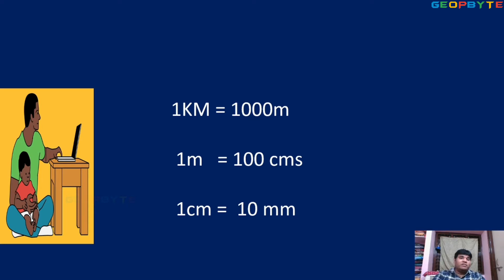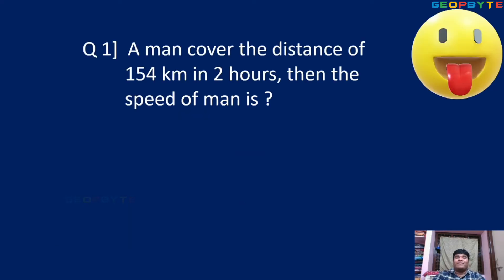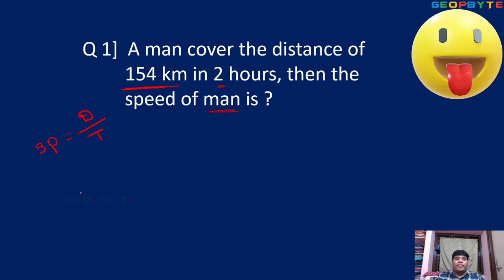Based on this, we have an examination question. A man covers a distance of 154 kilometers in 2 hours. Then what is the speed of the man? Speed logic: distance by time. Distance is 154, time is 2 hours. Your requirement is speed. So 154 divided by 2 — simplify: 2 sevens are 14, cancel, answer is 77 kilometers per hour.